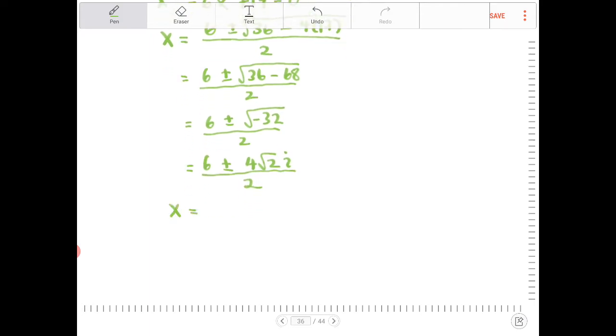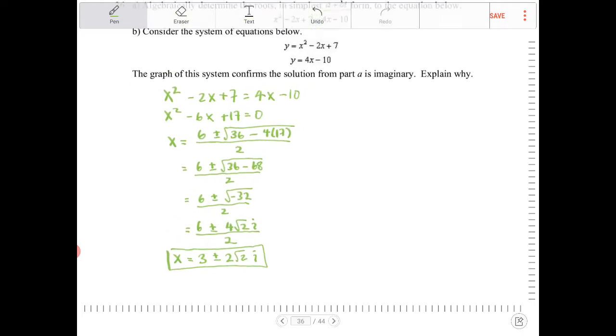So therefore, when we simplify this all the way down in the final step, we have 3 plus or minus 2 radical 2i as the final answer. So that's part A.